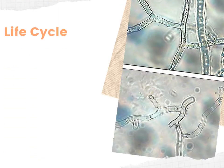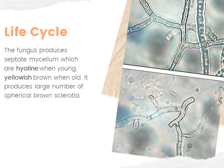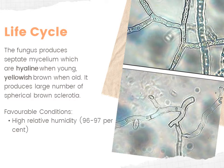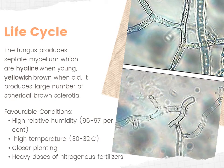Rhizoctonia solani is not currently known to produce any asexual spores, though it is considered to have an asexual life cycle. Occasionally, sexual spores or basidiospores are produced on infected plants. The mycelium is hyaline when young and yellowish-brown when old. It produces a large number of spherical sclerotia. Favorable conditions include high relative humidity of 96–97%, high temperature, close planting, and heavy doses of nitrogenous fertilizer.